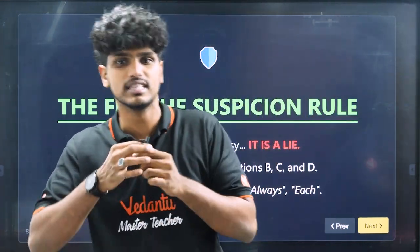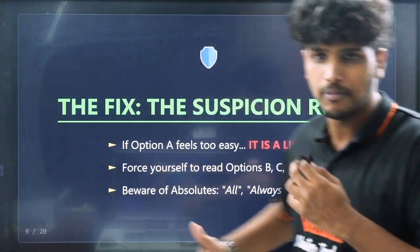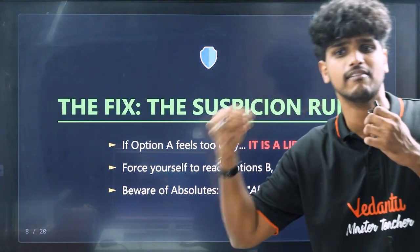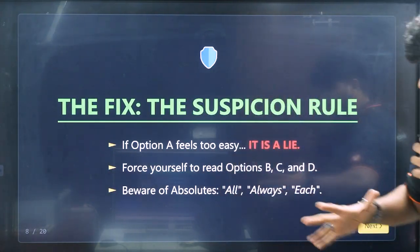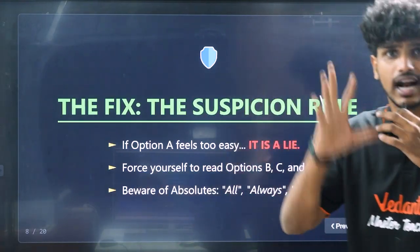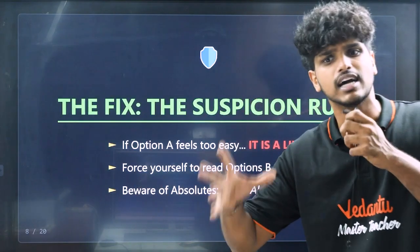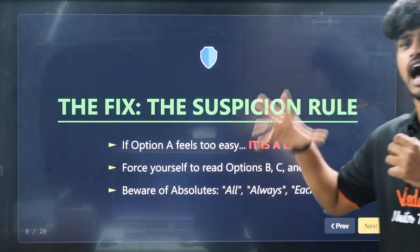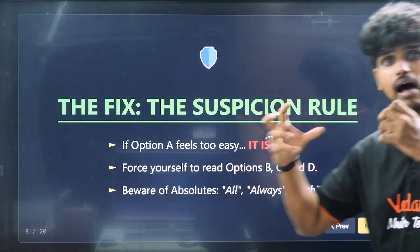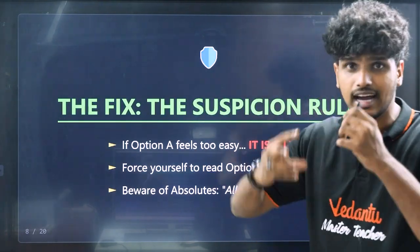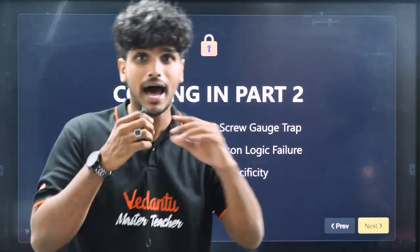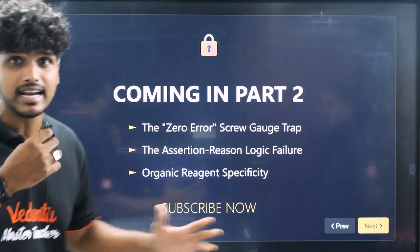How do you avoid impulsive optioning? Force yourself to read options B, C, and D before selecting. Watch out for absolute words like 'all,' 'always,' 'each,' and 'absolutely' — these are usually traps. If an option contains such words, it is likely incorrect. This is Part 1 of the trap. Part 2 involves the assertion-reason format, which is another major trap.